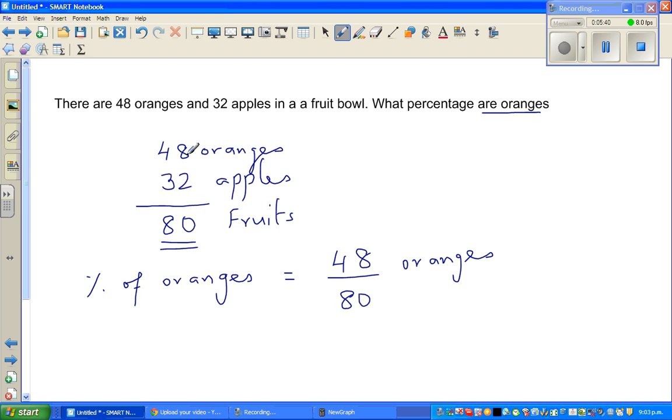You've got 48 oranges out of total 80 fruit. We can say it is 48 out of 80 oranges are there. So what can I do? I want to write this out of 100. So I can simplify this. Can I divide this by 4? Yes. 48 can be divided by 4 and can I divide 80 by 4? Yes, I can.